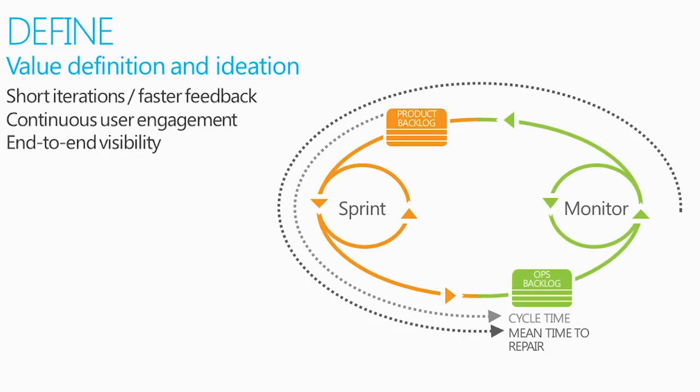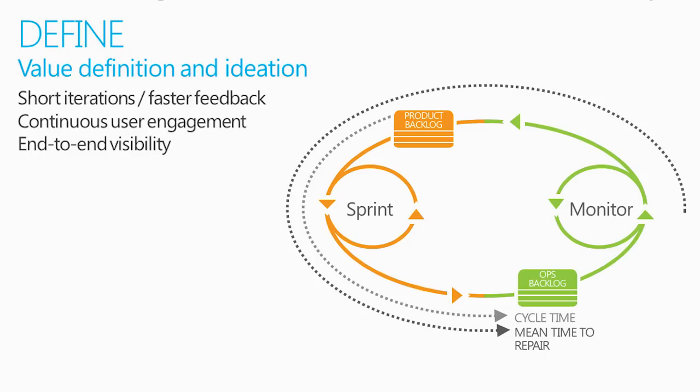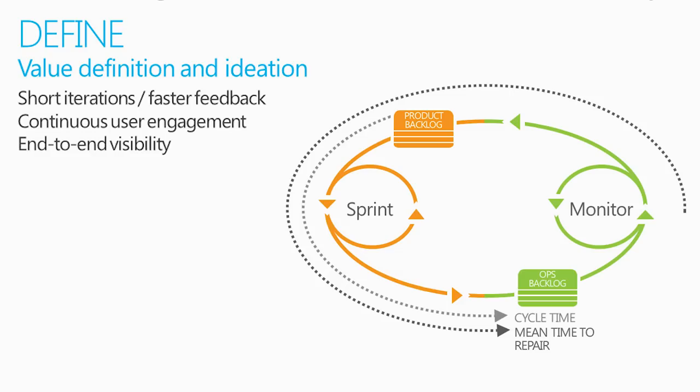The first phase is the definition phase, or 'define.' That's when we're talking to the stakeholders and asking what they want. They usually explain it wrong, so you do some sketches, and once you've done the sketches all they want to do is start coding. One of the key things is understanding what customers want — the best way we find is with pictures. Pictures speak a thousand words; it's much easier to comprehend things through pictures.